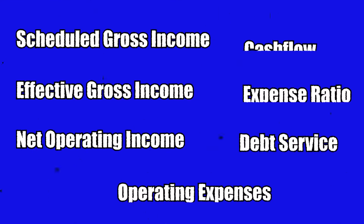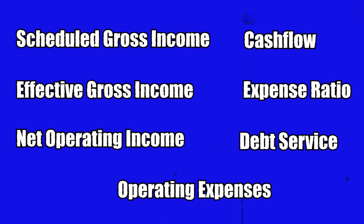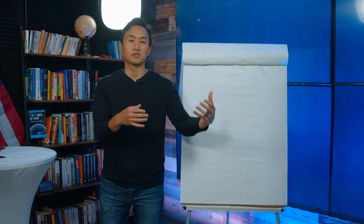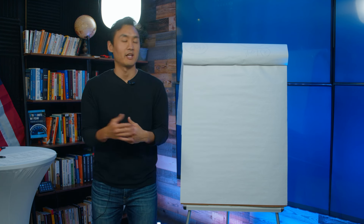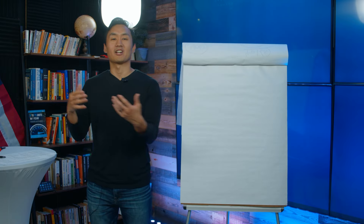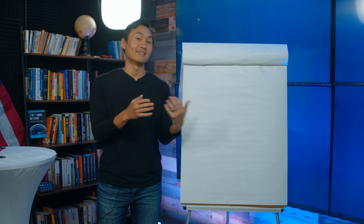Before we begin, here are some important key pieces of terminology for you to know — things like scheduled gross income, net operating income, debt service, operating expenses, expense ratio, and cash flow. The best way to share what those concepts are is to walk through an actual deal I did many years ago, so you can follow along and see how much I actually ended up making.